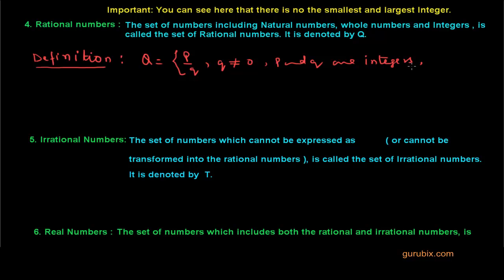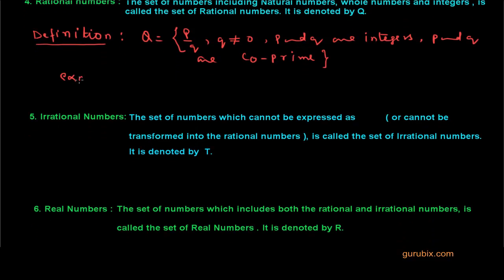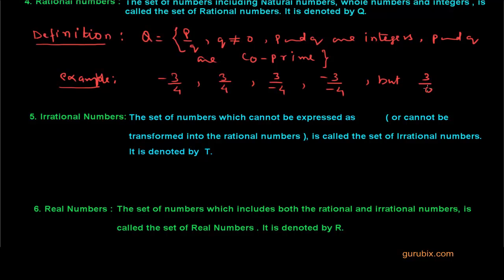There is another important property: P and Q are co-prime numbers. I have told you about co-prime numbers in another video; you are requested to learn them. For example, minus 3 by 4 is a rational number, 3 by 4 is also a rational number, and 3 by minus 4 is also a rational number. But numbers like 3 by 0 are not rational numbers, because no number can be divided by 0, so this number does not exist.